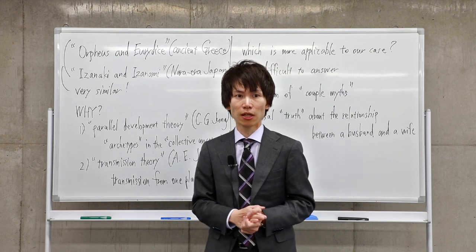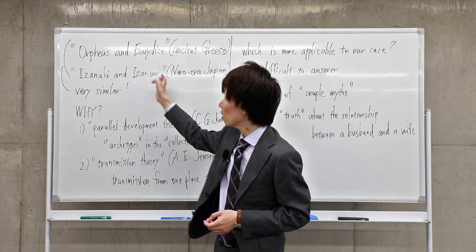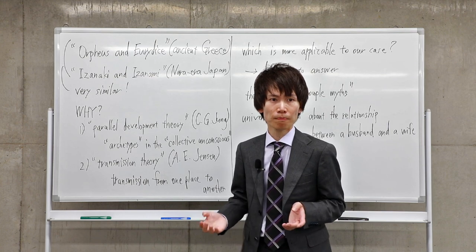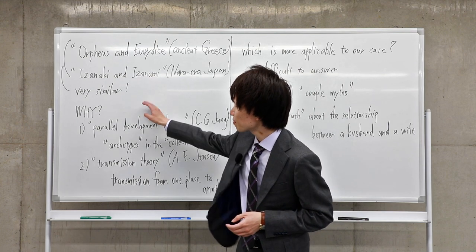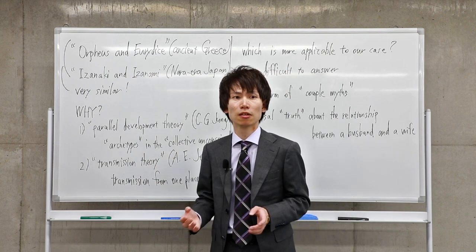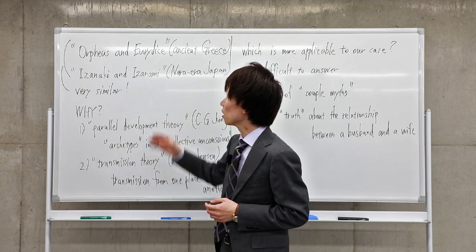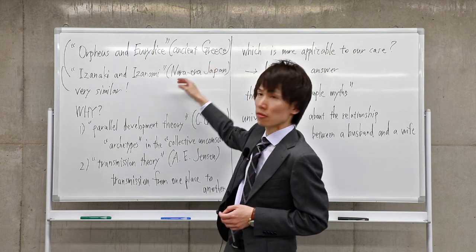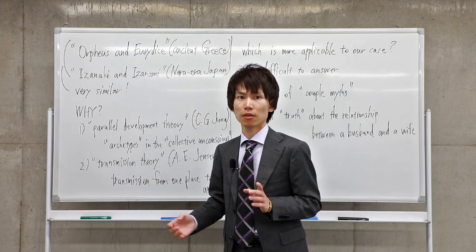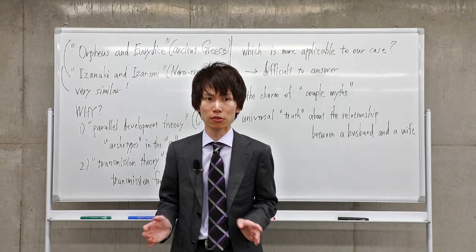This quick summary shows us the two stories are very similar. But why? This similarity is very surprising, especially when we consider that ancient Greece and Nara-era Japan are very different from each other in time and place.